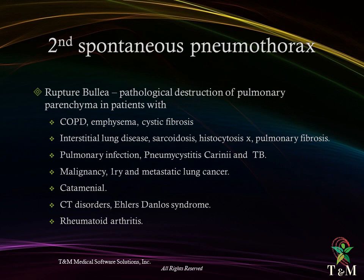Secondary spontaneous pneumothorax involves ruptured bullae due to pathological destruction of pulmonary parenchyma in patients with COPD, emphysema, cystic fibrosis, sarcoidosis, pulmonary fibrosis, pulmonary infections such as TB, malignancy either primary or metastatic cancer, catamenial pneumothorax, connective tissue disorders, and rheumatoid arthritis.